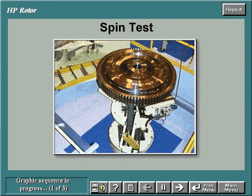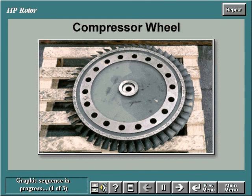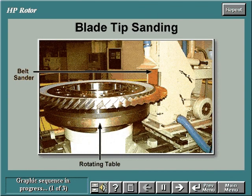Prior to assembling the high pressure rotor, the compressor and turbine wheels are spin tested. Then the compressor blades are slid into slots in each compressor wheel. The blades are staked to maintain their positions in the wheel. Once assembled, each compressor wheel is placed on a rotating table and a belt sander sands the blade tips down to the proper dimensions as called for by specification.